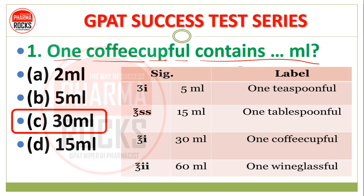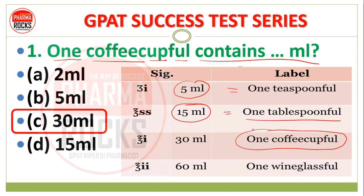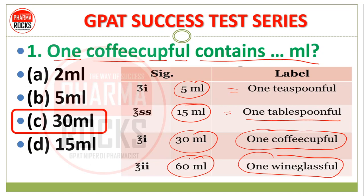The explanation: 5 ml equals 1 teaspoon full. 1 tablespoon full is equal to 15 ml. 1 wine glass is equivalent to 60 ml. तो ये conversion आपको अच्छे से याद रखने हैं। बहुत सारे competitive exams में इसमें से questions पूछे जाते हैं। This is your most important table — ये table आपके लिए most IMP है, जिसको अच्छे से आपको तैयार कर लेना है for the upcoming examinations.